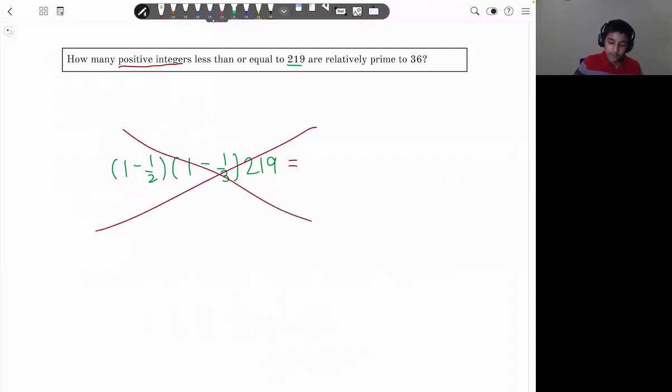And the reason why this isn't correct is because 219 isn't a multiple of 2. There are actually 109 multiples of 2 less than 219. So 109 over 219 of the numbers are going to be multiples of 2, not 1 half. So how can we deal with this?